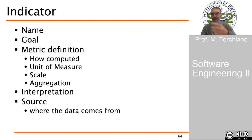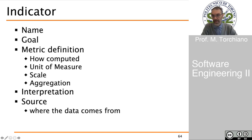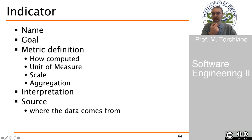The final result of a measurement project is an information product containing indicators. Whenever we want to specify an indicator, we can follow a structured template. An indicator has a name and a goal — what it is useful for. It includes a definition of how the measure is computed, the measurement procedure, the unit of measure, the type of scale, and how it can be aggregated. It also includes interpretation guidelines and the source — where the data used to compute the indicator comes from.